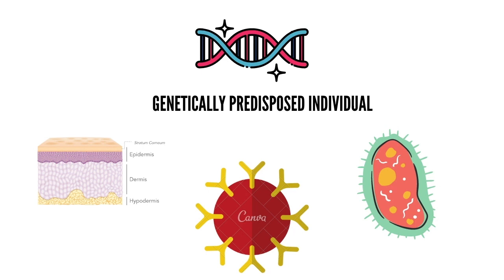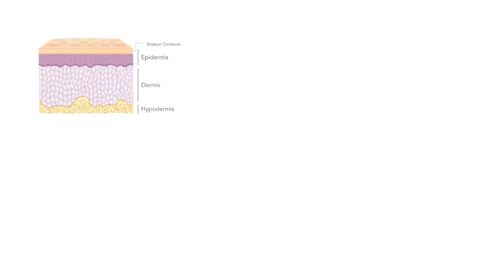Genetic factors account for 90% of susceptibility to early-onset atopic dermatitis, with a significantly higher concordance rate in monozygotic twins at 77% compared to 15% in dizygotic twins. A parental history of atopic dermatitis is a stronger risk factor than either asthma or allergic rhinitis. Atopic dermatitis is a complex genetic disease where both gene-gene and gene-environment interactions play an important role.